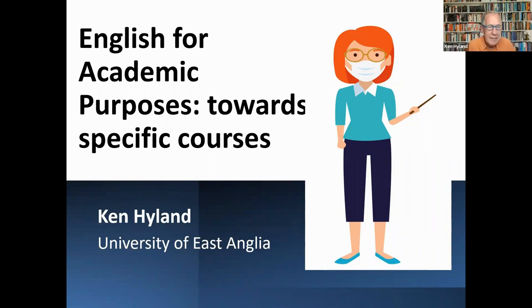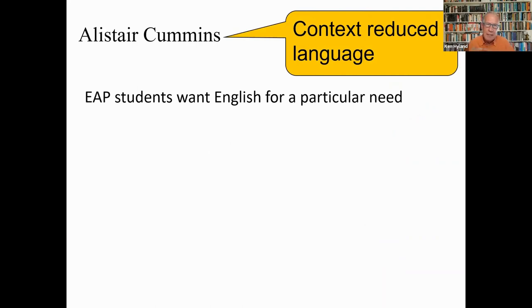What sets English for Academic Purposes apart from general language study is its focus on specific purposeful uses of language. Specific purposes texts use what Alastair Cummings once called context-reduced language, which tends to be abstract and less reliant on an immediate context for its coherence. EAP students are studying English for a particular practical need, which is why researchers study target language features and teachers focus on these features in their classrooms. This attention to specificity has shaped the field's strong research orientation.